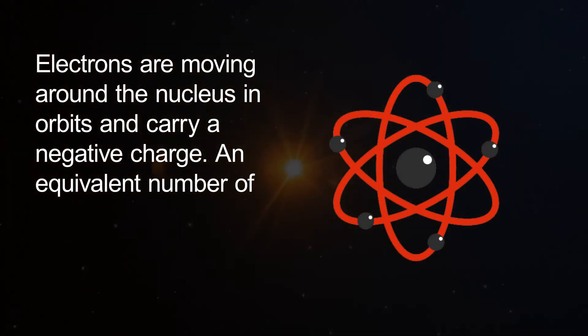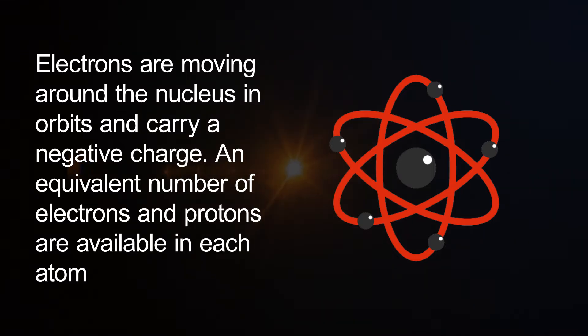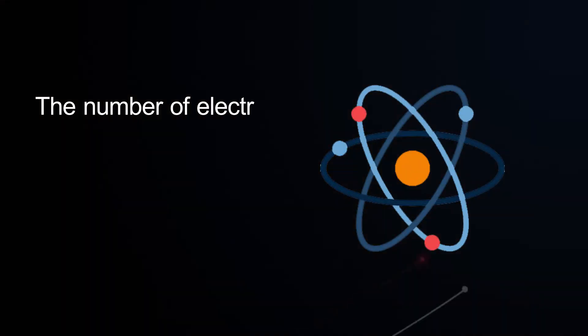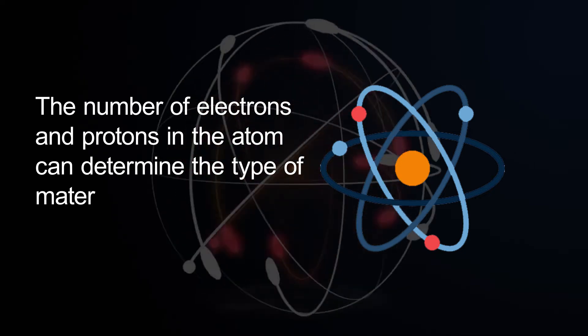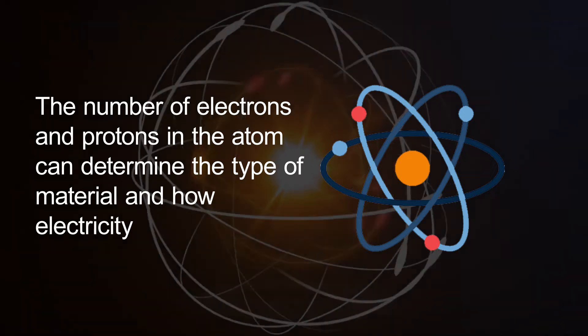An equivalent number of electrons and protons are available in each atom. The number of electrons and protons in the atom can determine the type of material and how electricity is conducted.